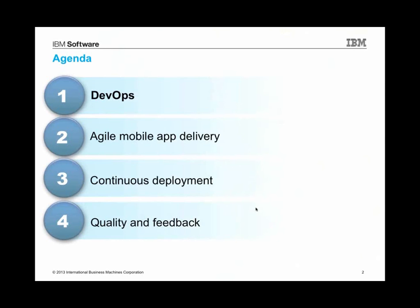The agenda I've prepared is to talk a little bit about the concept of DevOps and what that means and why it's important to those developing mobile applications. In part two, we'll look at applying lean and agile techniques to mobile application delivery. In part three, we'll take a look at continuous deployment as a key practice that we advocate and have software that supports. And then in part four, we'll talk about mobile quality, and I've got a very exciting announcement about a special offering we have in this area.